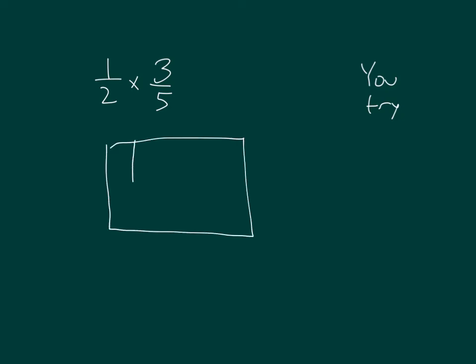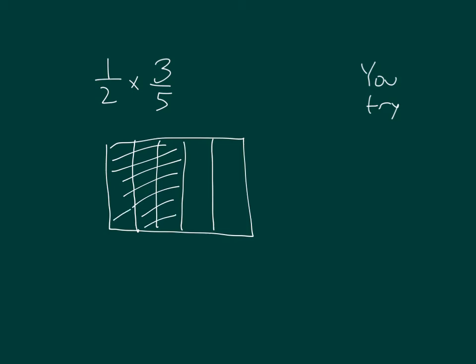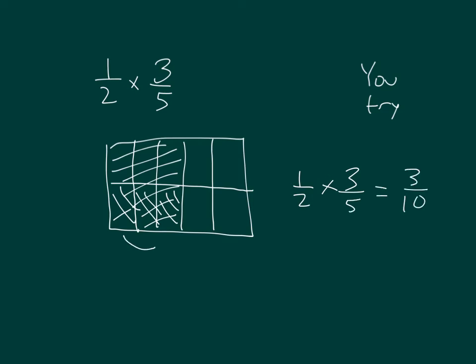We have an area model. Look at fifths first, and we look at three-fifths. And then we're taking one-half of it. That gives us three out of ten — three-tenths. One-half times three-fifths does equal three over ten. Let's finish labeling the rest of this model. So one-half of three-fifths does equal three-tenths. Look over your work and compare it.